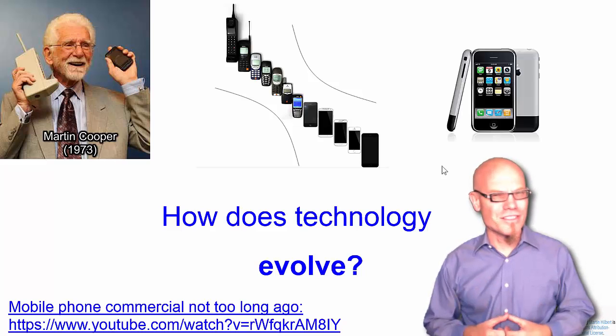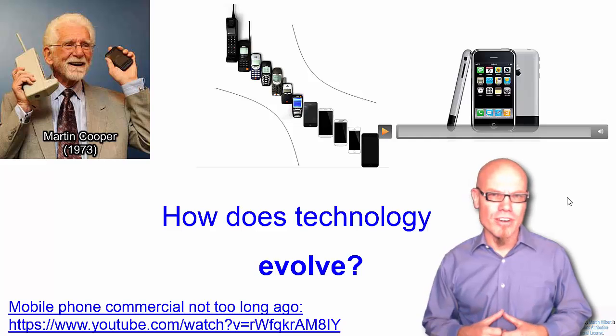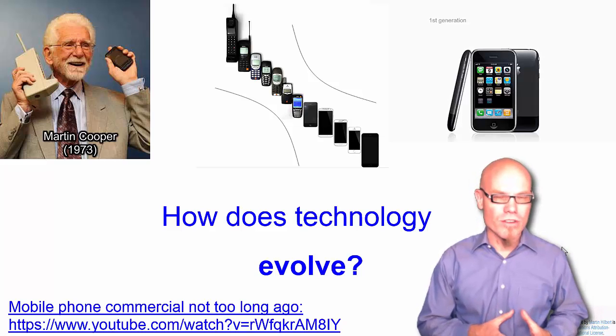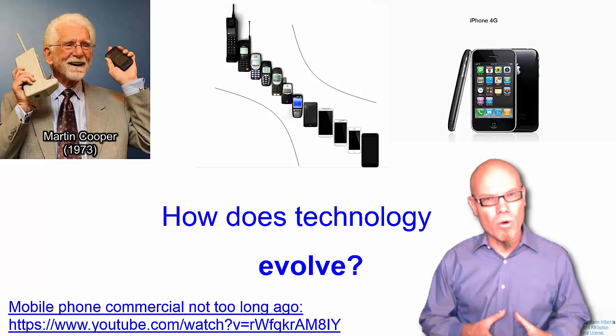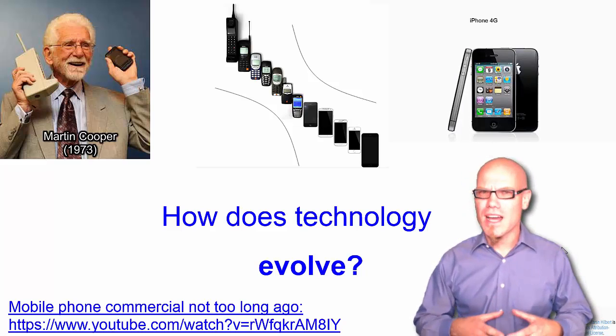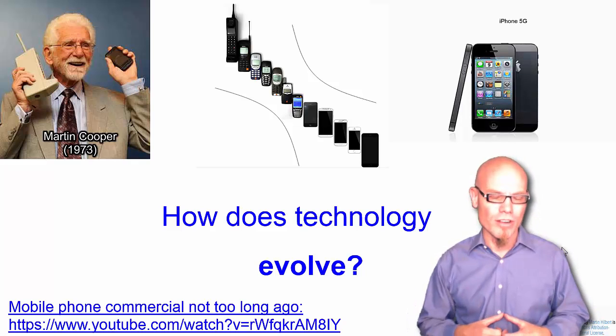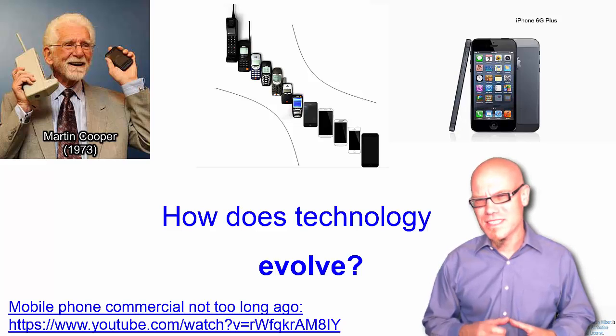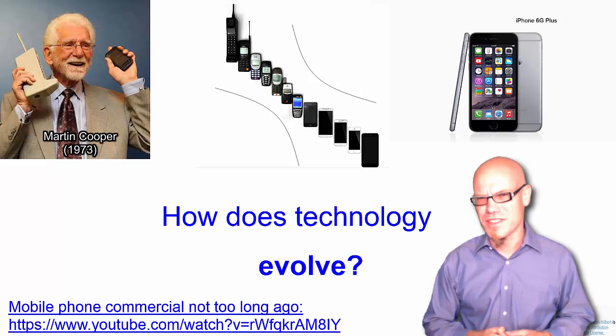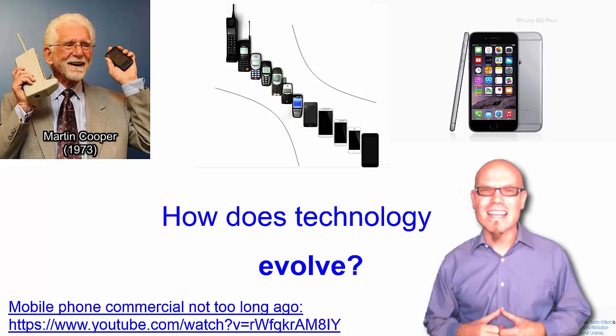And mobile phones continue to evolve incessantly. For example, the iPhone from the first generation to the iPhone 3 and the iPhone 4, the iPhone 5, the iPhone 6, 6 plus and so forth. Mobile phones continue to evolve. So, the basic question is, how does technology evolve? Is there something we can say about the nature of this evolution? So let's look at that.